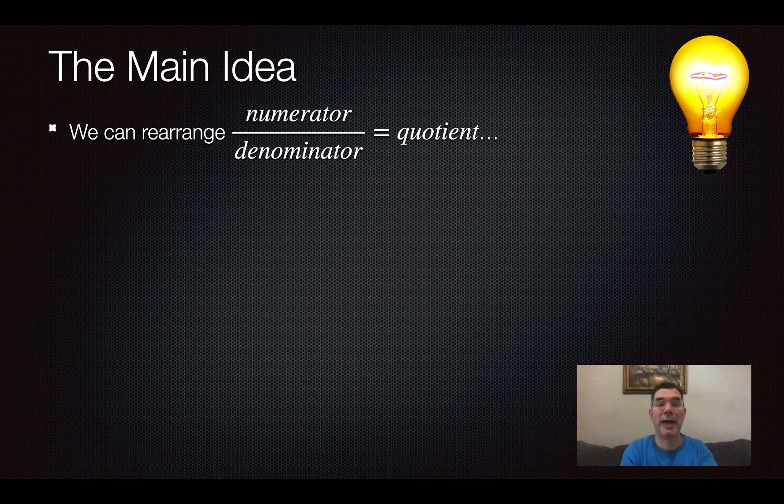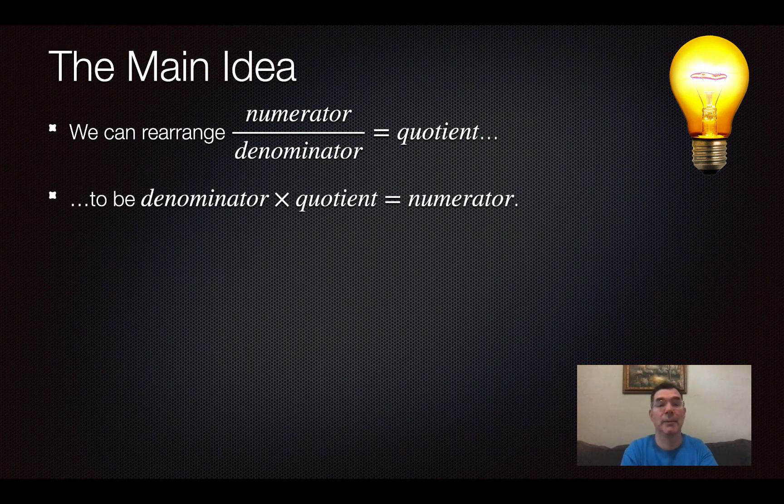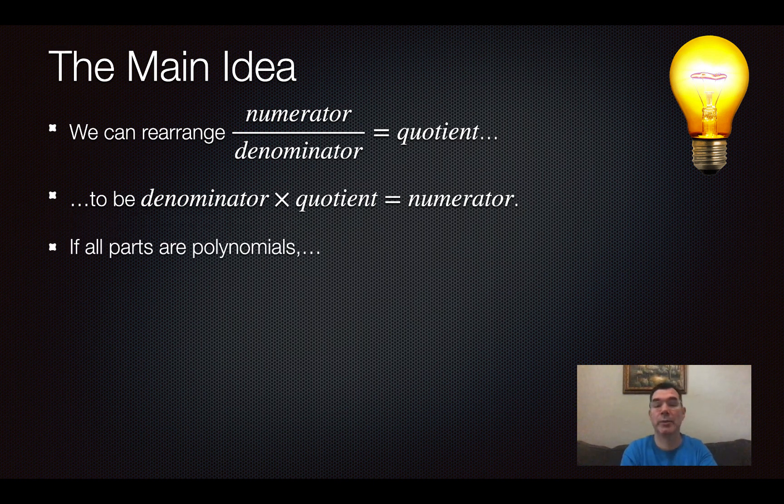So normally what you have is you have a numerator over a denominator and that equals a quotient. That's what division is. And so what we can do is we can rearrange that and turn it into a multiplication problem so that the denominator times the quotient would equal the numerator. Now we're not dealing with numbers here, we're dealing with polynomials.